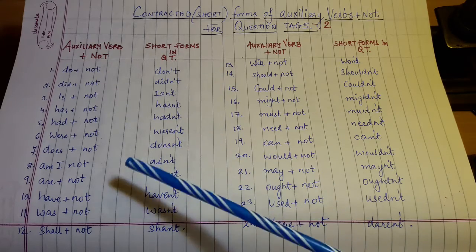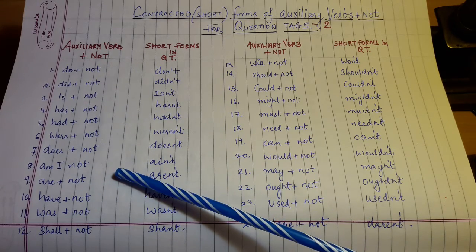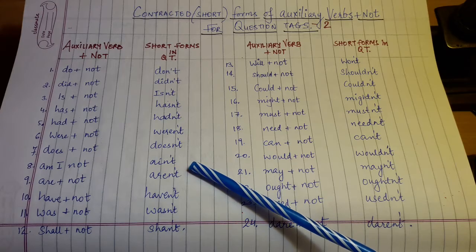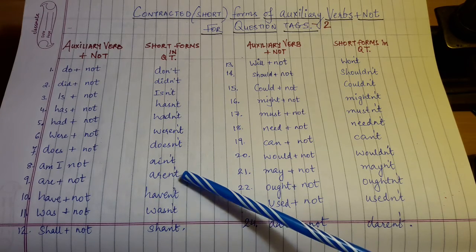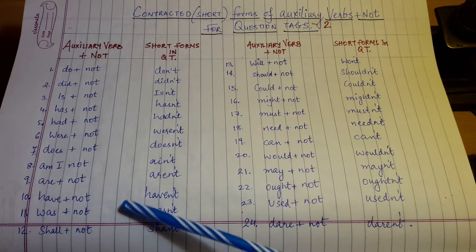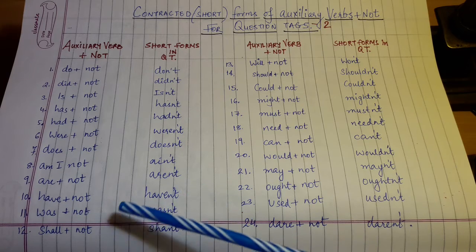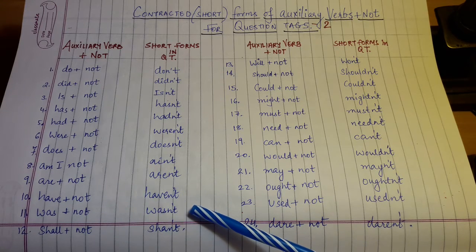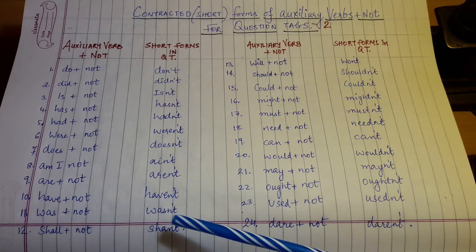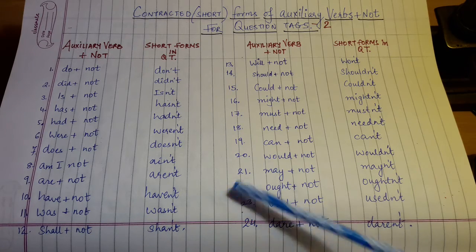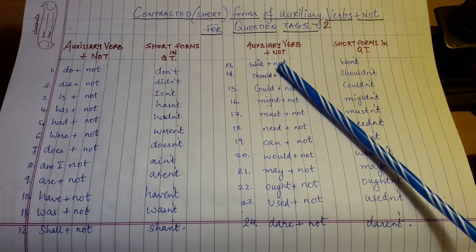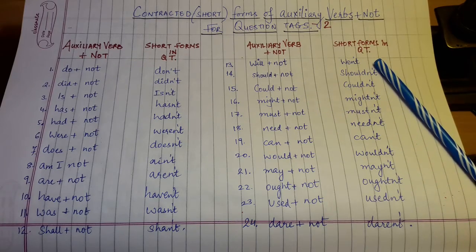Am I not - ain't, are not - aren't, have not - haven't, was not - wasn't, shall not - shan't, will not - won't.